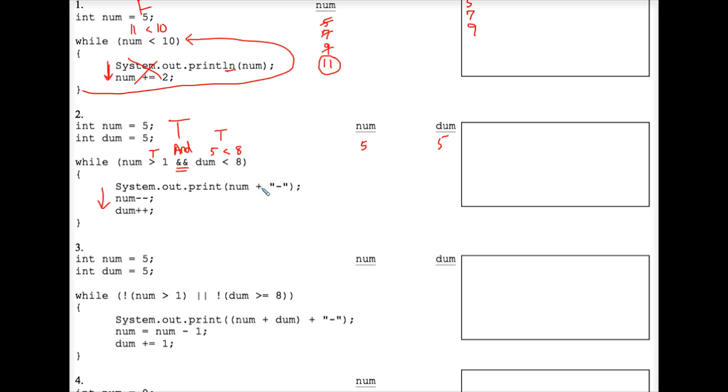We system out print num plus hyphen. Num is 5, so that prints. This plus performs string concatenation, so it glues the hyphen next to the integer 5. Num minus minus means to subtract 1 from 5. Dum plus plus adds 1 to dum to make it 6. The curly brace tells us to go back up to the top of the while loop. We evaluate the control expression again, breaking this down into pieces. Again, we have a true and with a true. We go through the loop.